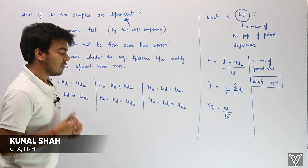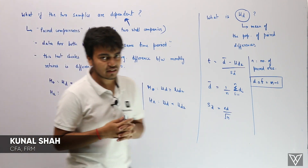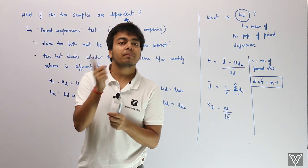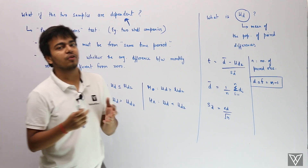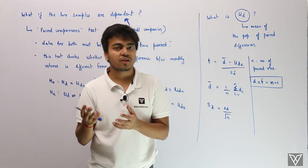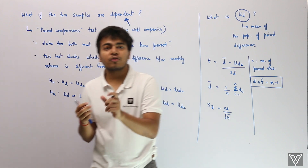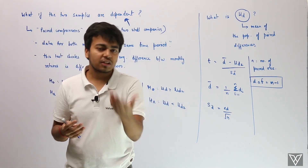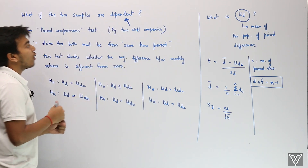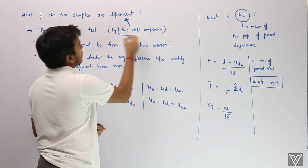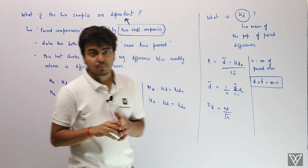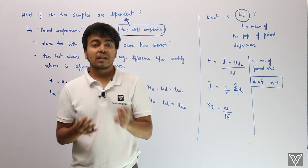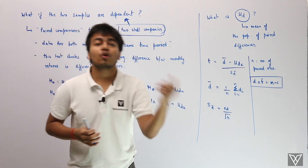In this video we'll be understanding how exactly we do hypothesis testing when we have two series that are dependent on each other. For example, what if we are talking about two steel companies? Whatever returns the two steel companies are making, they would be dependent on each other.